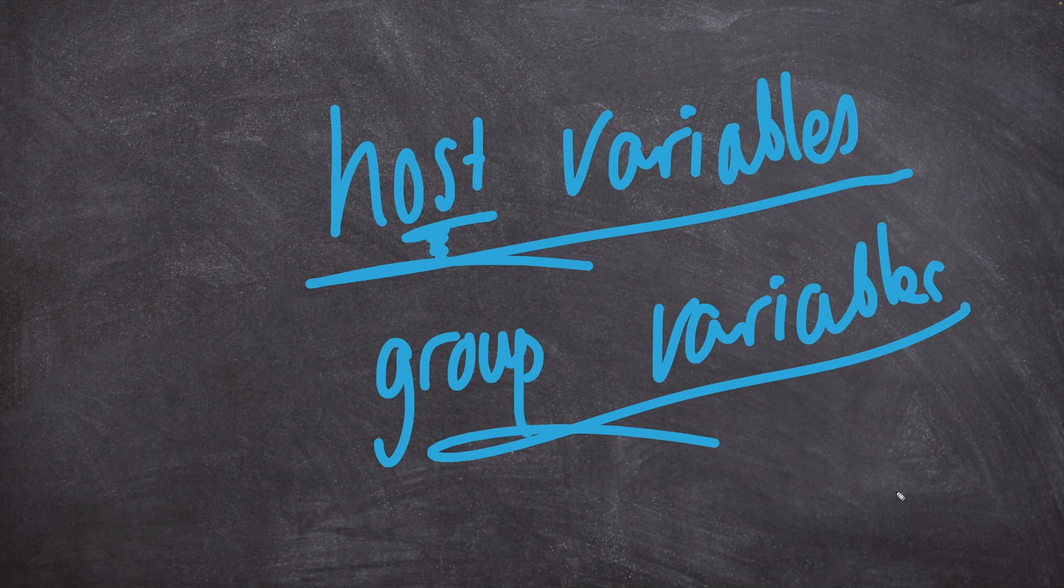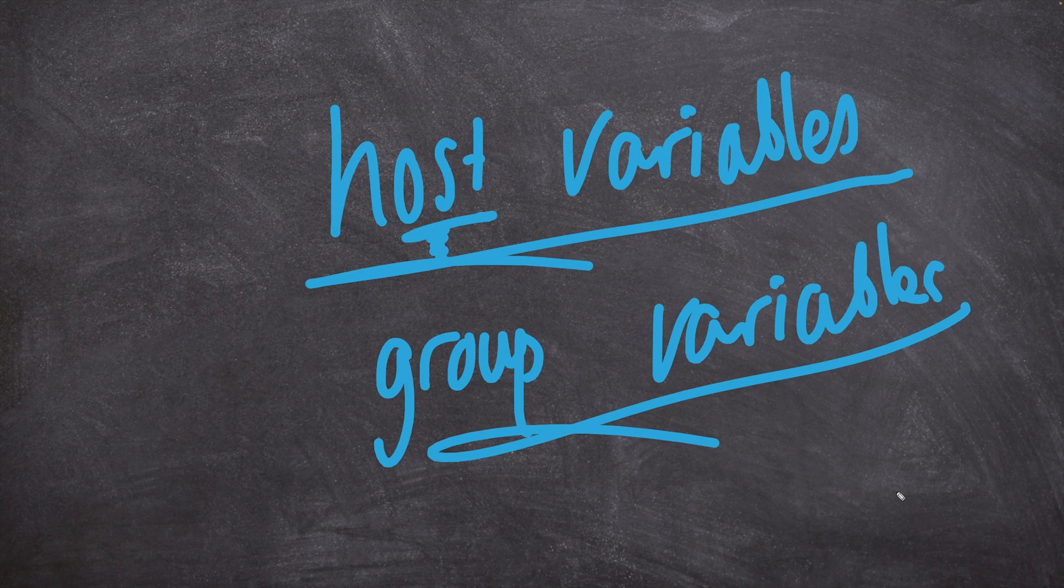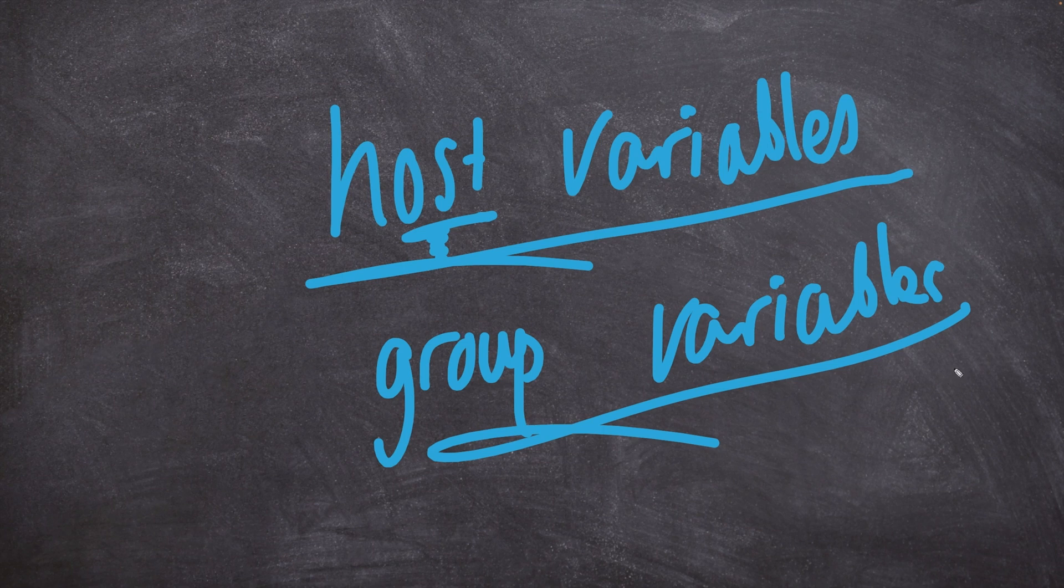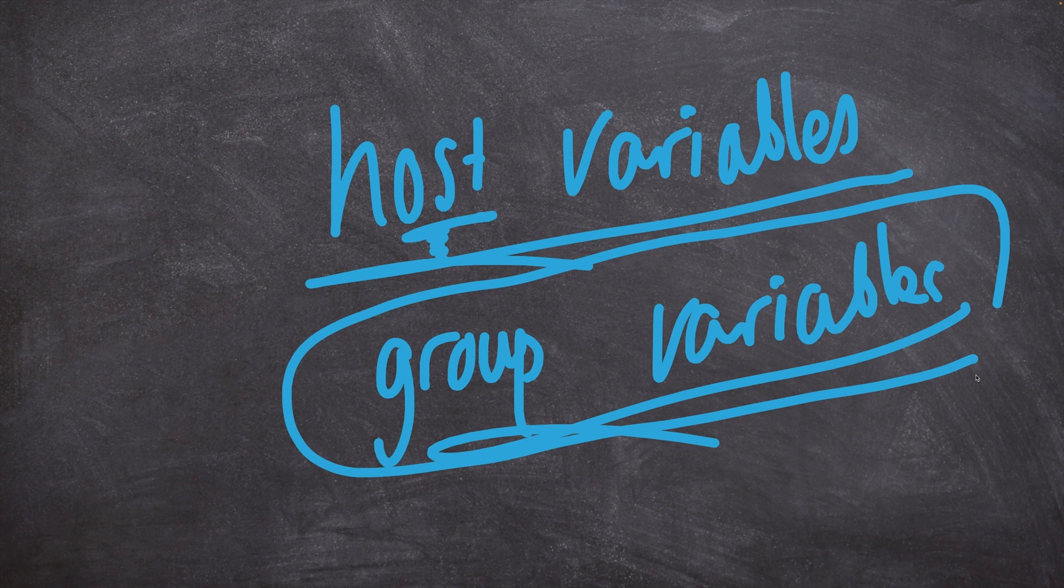Perhaps we have four devices in the UK and all those UK devices need a particular NTP server that's different from all the servers in the United States. We can specify those UK unique values as a group variable and target all the UK devices in the inventory. We'll see this in more detail later on.